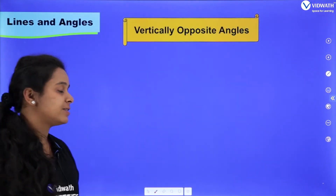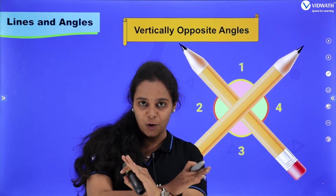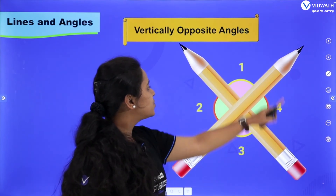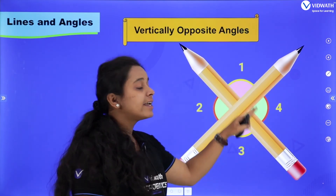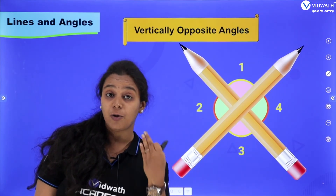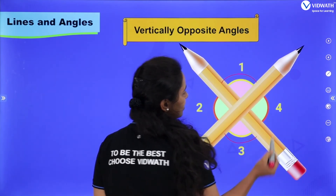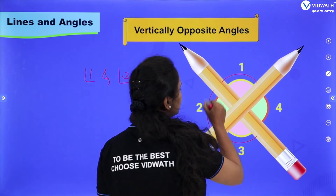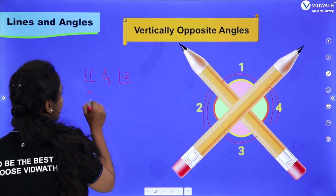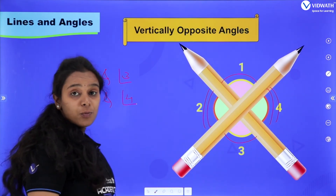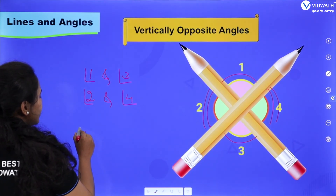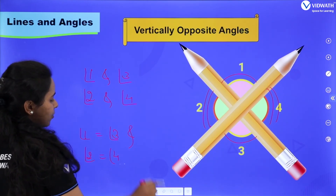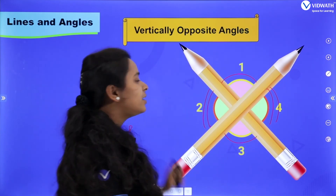The next topic is vertically opposite angles. When two lines meet at a common point, the angles formed are called vertically opposite angles. Here, angle 1 and angle 3 are vertically opposite angles, and angle 2 and angle 4 are vertically opposite angles. Vertically opposite angles are equal: angle 1 equals angle 3, and angle 2 equals angle 4.